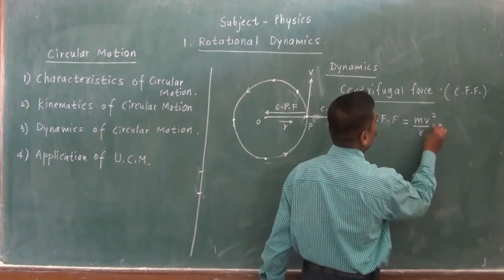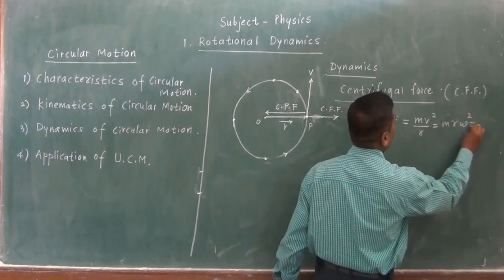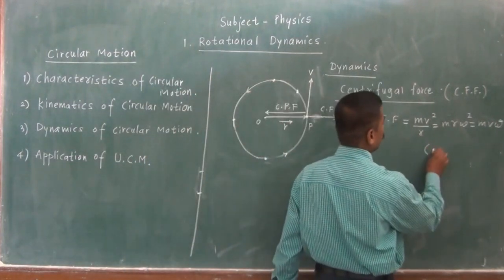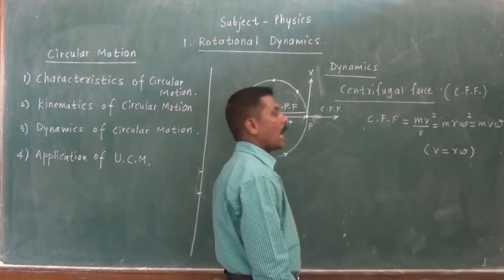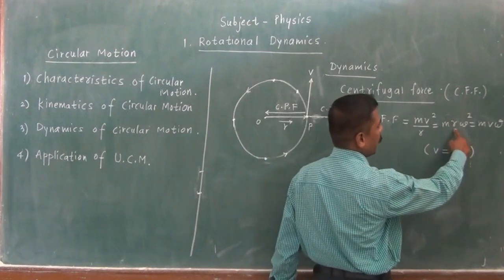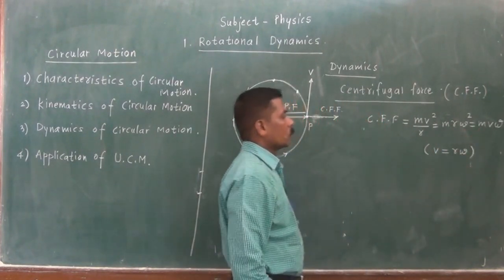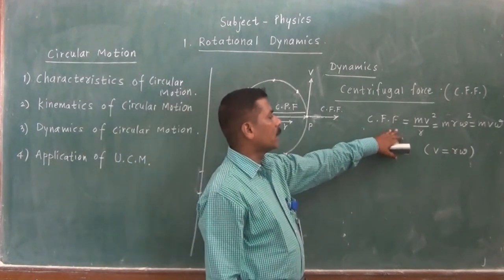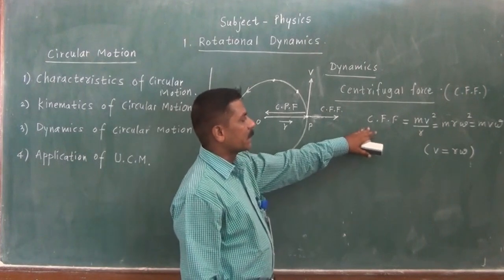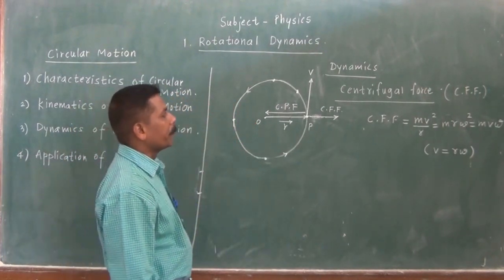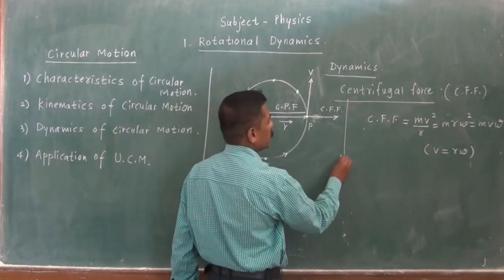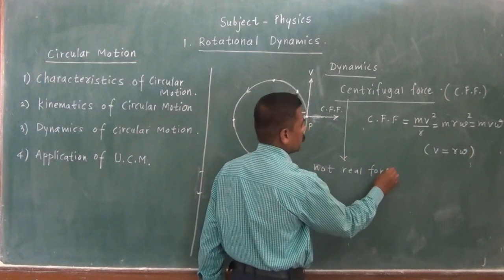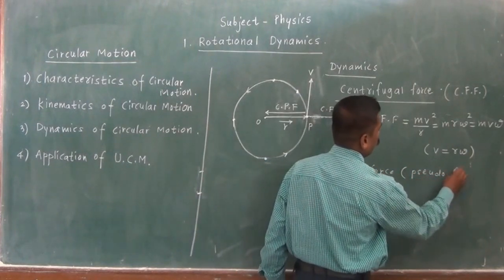The formula for centrifugal force is mv²/r, or mrω², or mvω (using the relation v = rω). This formula is the scalar form. If you observe the centrifugal force, it is not a real radial force — it is a pseudoforce, a non-real or imaginary force.